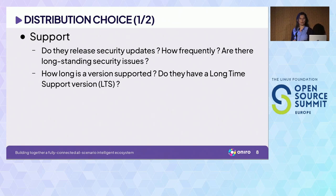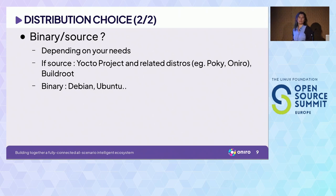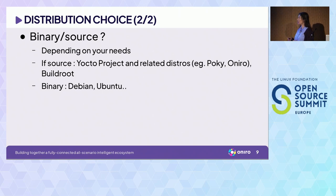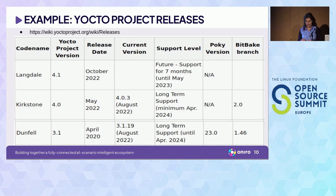If your product is going to be supported longer than the distribution supports its long-term support version, it means you are going to maintain it later. On binary or source distribution — it depends on quite many things. If you are using source, you have a choice, for example, to use the Yocto project or related distributions like Buildroot. On binary, I've seen quite many people using Debian or Ubuntu, especially in the robotics space.